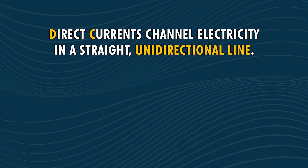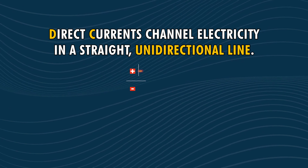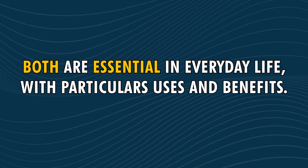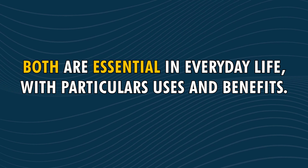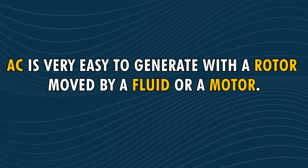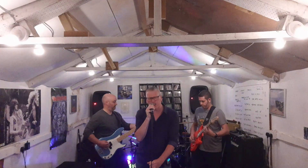We use them more than you think in everyday life. Direct currents channel electricity in a straight unidirectional line. Alternating currents have a continuous flow and push electricity in waveforms. Both are essential in everyday life with particular uses and benefits. AC is very easy to generate with a rotor moved by a fluid or a motor. And it's okay to listen to AC/DC when you're studying AC and DC.